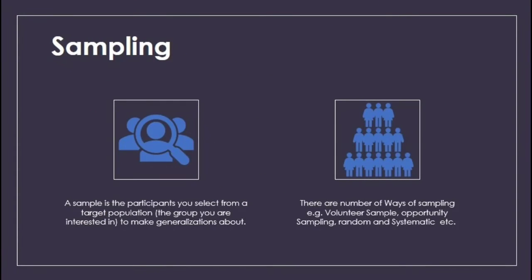Next, sampling. Sampling is a very straightforward method. A sample is the participants you select from a targeted population — those people on whom an experiment or research is performed. This is a generalization applied to participants under similar conditions.